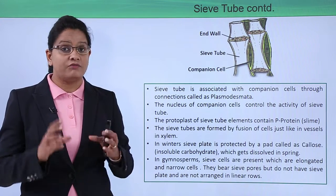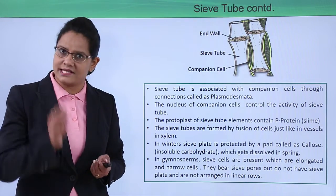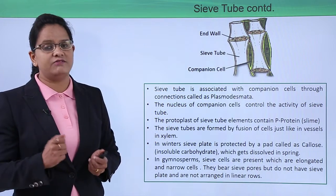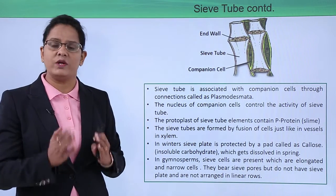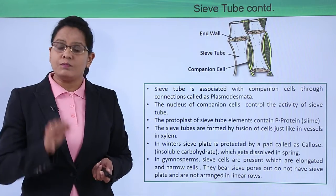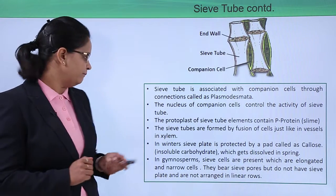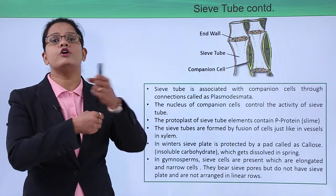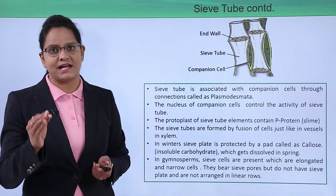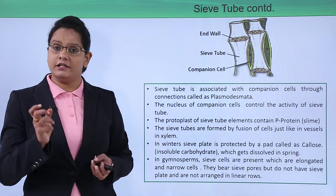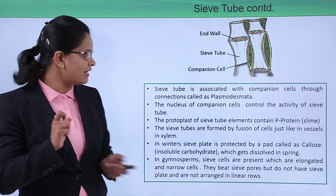Since the sieve tube has no nucleus, the companion cell controls its activity. The companion cell is joined to the sieve tube cell through connections known as plasmodesmata, so it is the nucleus of the companion cell that controls the activity of the sieve tube. The protoplast of sieve tube elements has a special type of protein known as P-protein, or phloem protein. Since sieve tube members are stacked one on top of the other with no wall in between, they form cell fusions or syncytes, just like vessels.